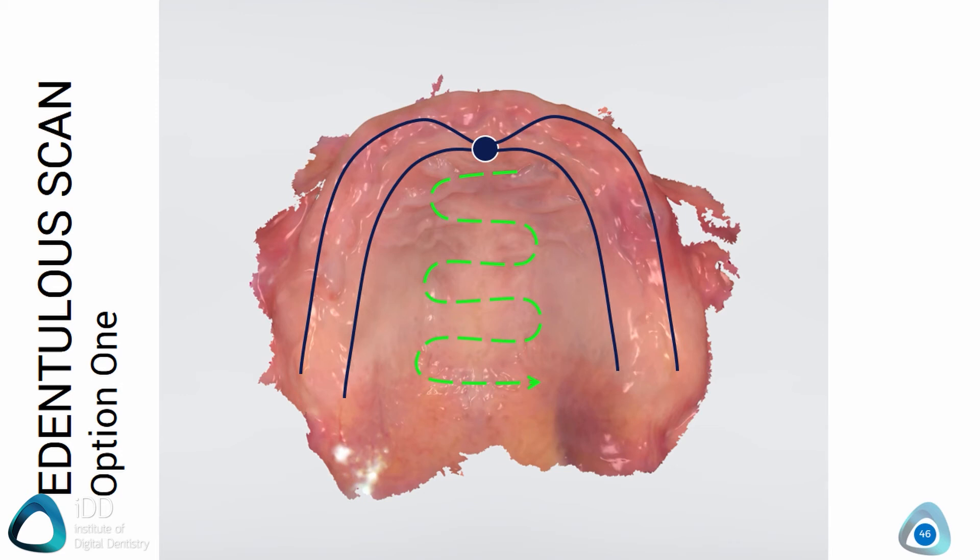If alignment is lost, you can resume the scan from the rugae area as your best reference point. If alignment repeatedly fails on the same area, you may need to remove that particular area of the scan and try again. That is your full arch upper edentulous scan.